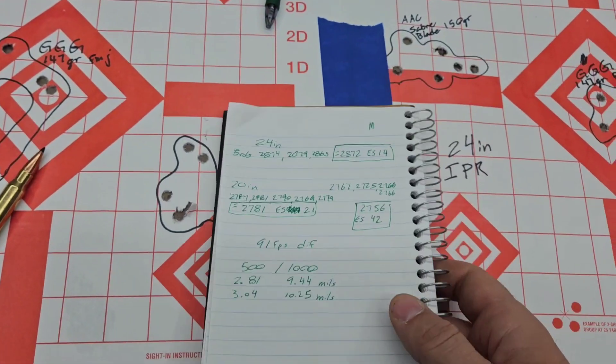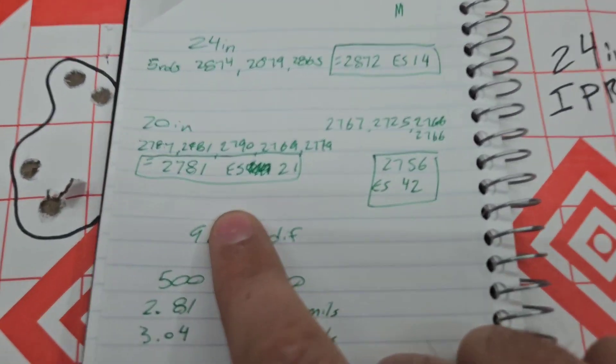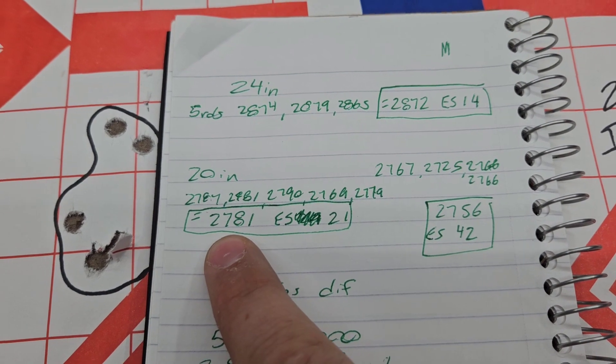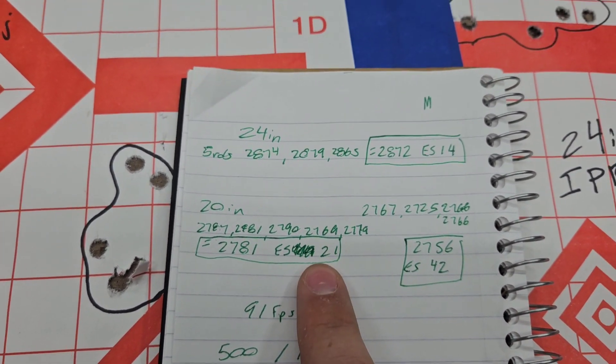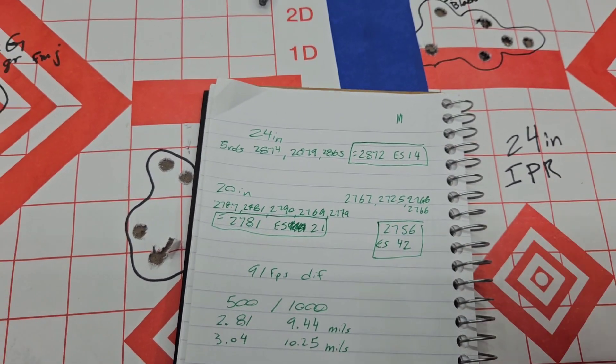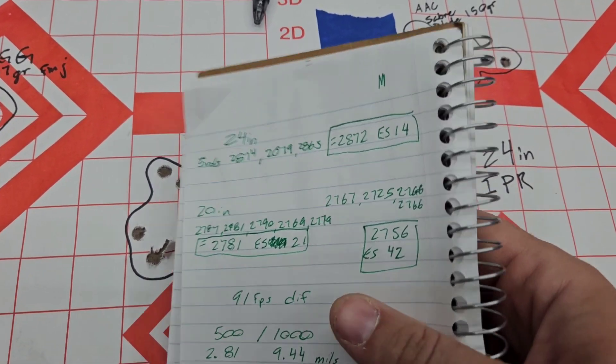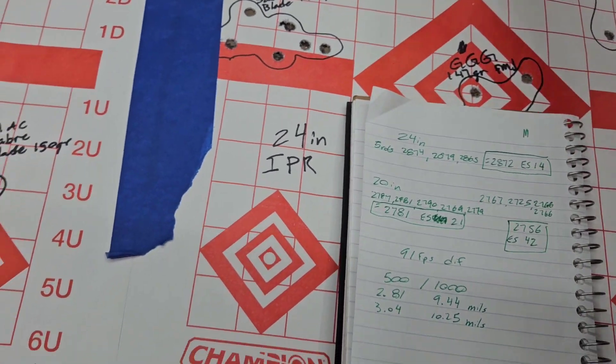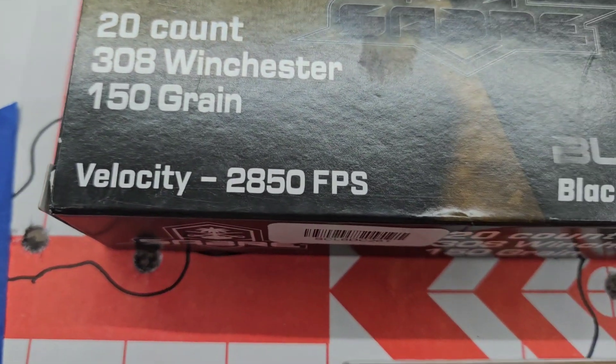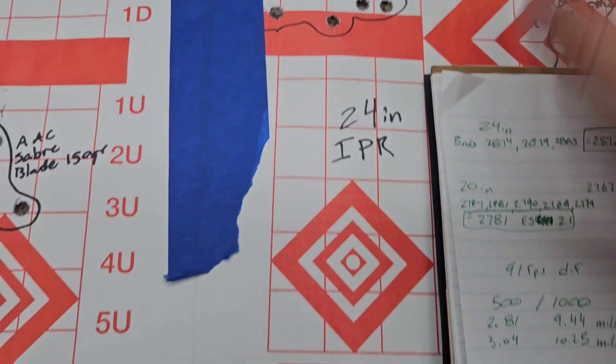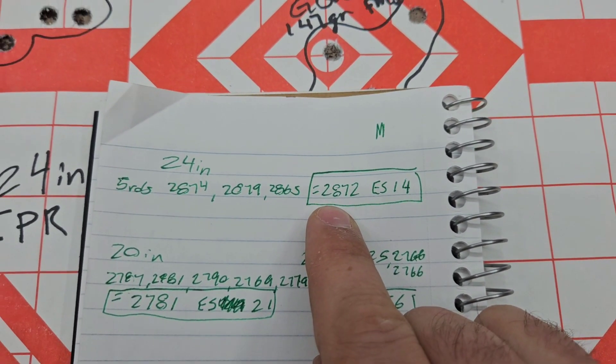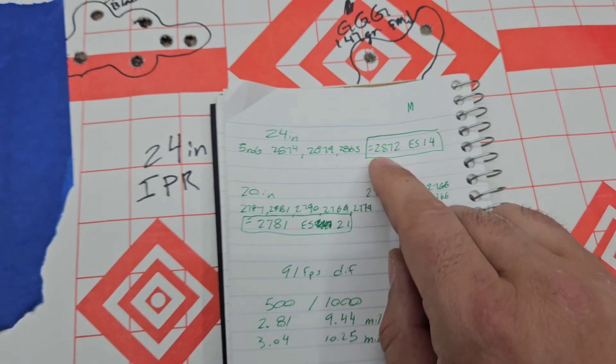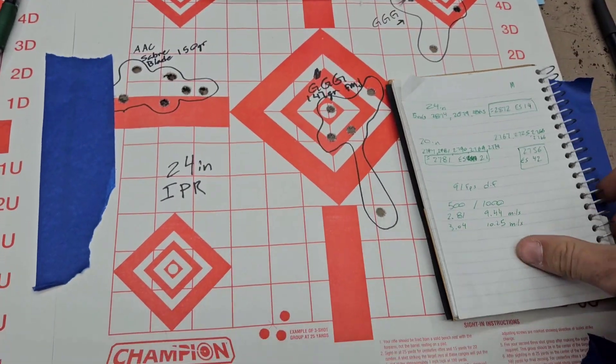That's not too terrible. Speeds on the 20-inch gun. We're looking at 2781, an extreme spread of 21. So it's not too terrible. As far as what the box advertises, 2850 out of a 24-inch barrel. And we're getting 2872. So we're actually a little above the box, which is okay. I'd rather be above than below.